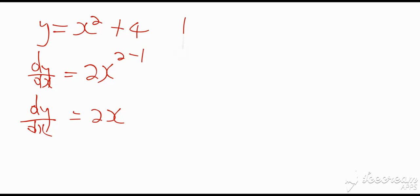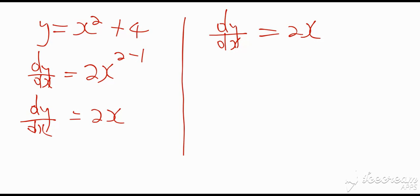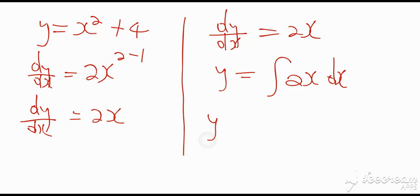Now, dy/dx equals 2x. We have the gradient function and want to go back to the original function y, which is x squared plus 4. Since differentiation brought the power to the front and subtracted one from the power, reversing it means we add one to the power and divide by the new power. So y equals the integral of 2x dx: we add one to the power (1 + 1 = 2) and divide by the new power (2).